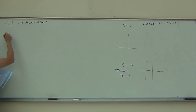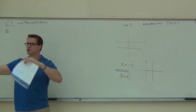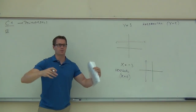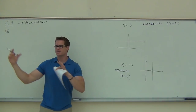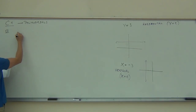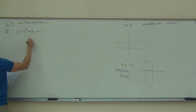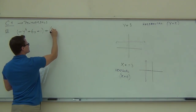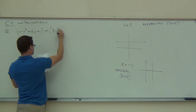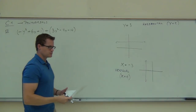Let's take a look at some adding polynomials. Typically when you see these problems, you're going to have two sets of large parentheses — this is our first polynomial plus our second polynomial. What they're really doing is separating those for you, saying this came from somewhere, this other one came from somewhere, and we want to add them together.